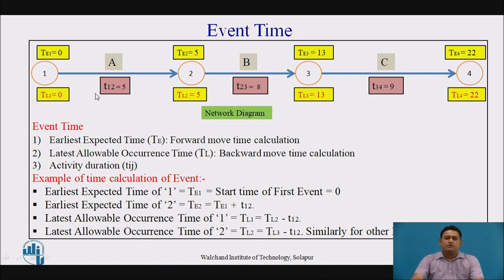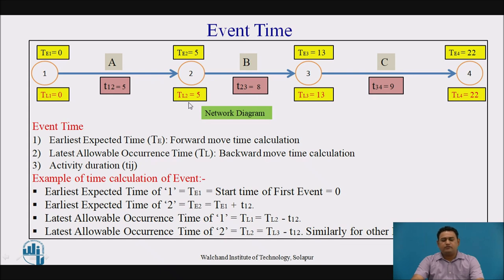For the time calculation moving left to right: 0 + 5 = 5, 5 + 8 = 13, 13 + 9 = 22. Similarly, moving right to left: 22 − 9 = 13, 13 − 8 = 5, 5 − 5 = 0. These are the event times for the network.